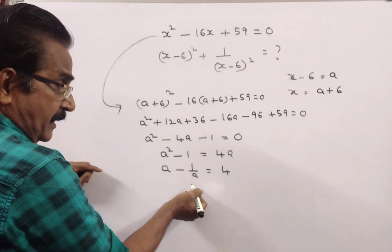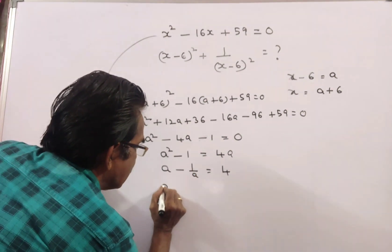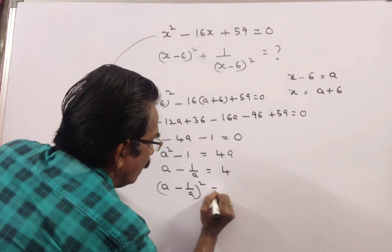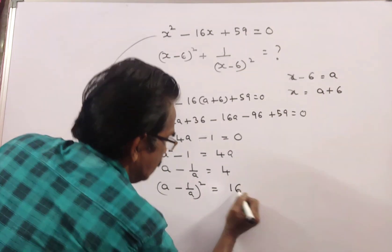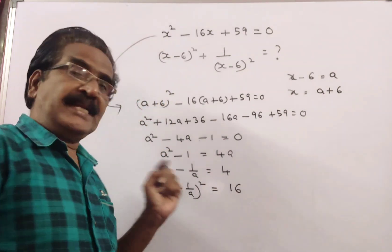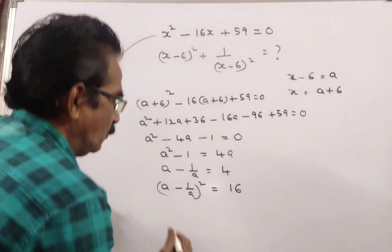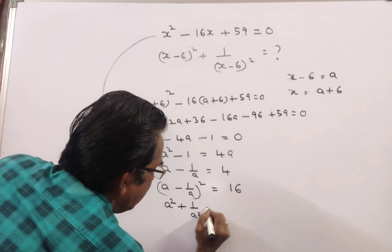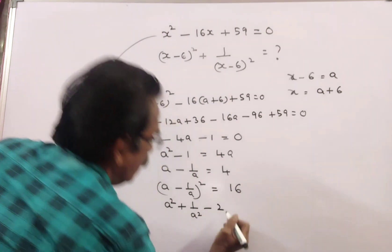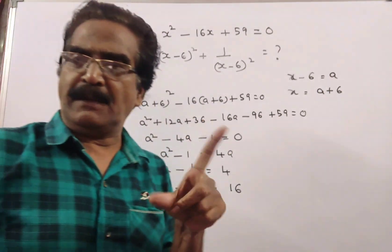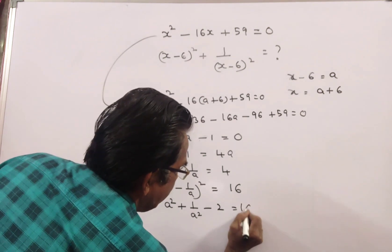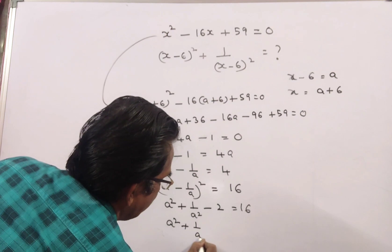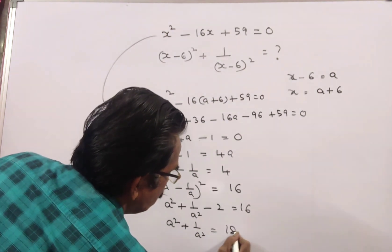Now let us square a minus 1 by a. (a minus 1/a)² is equal to a² plus 1 by a² minus 2 into a into 1 by a, which equals a² plus 1/a² minus 2, and that equals 16. So a² plus 1 by a² is equal to 16 plus 2, which is 18.